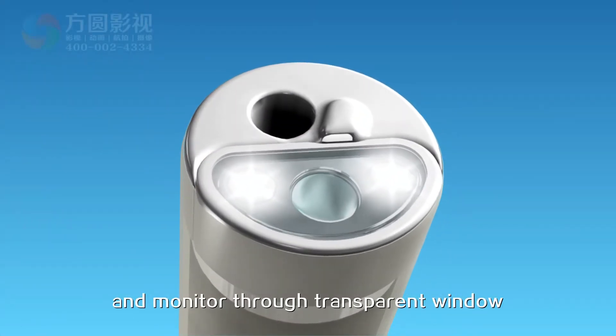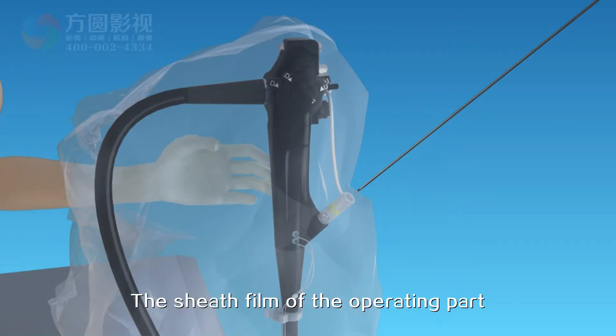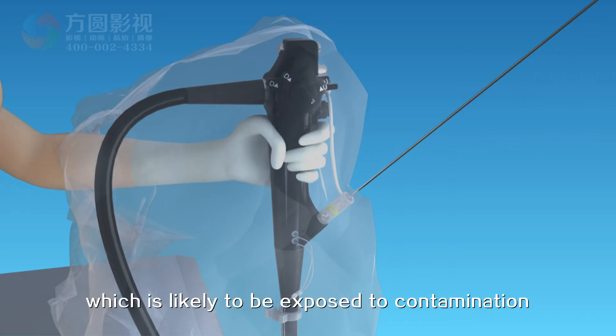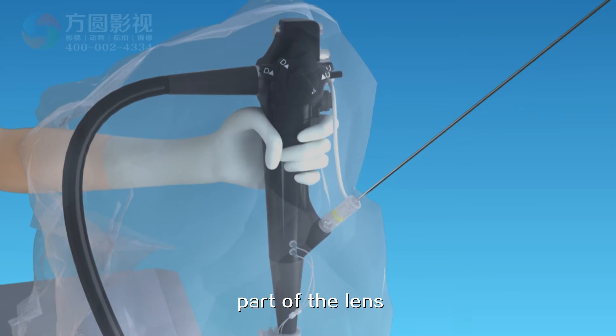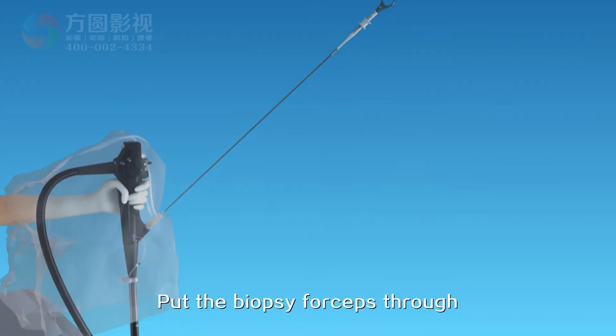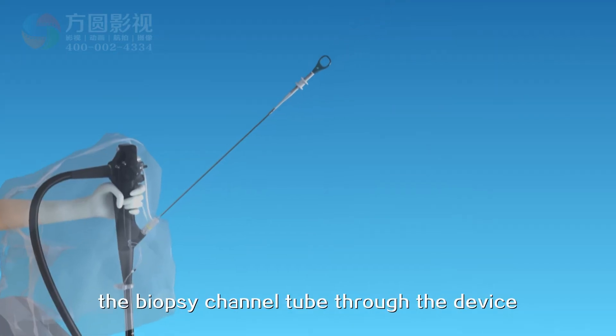The sheath film of the operating part can prevent the right hand, which is likely to be exposed to contamination, from contaminating the left hand and the operating part of the lens.